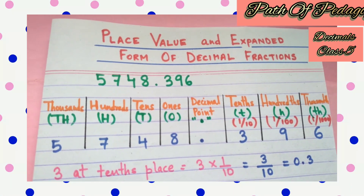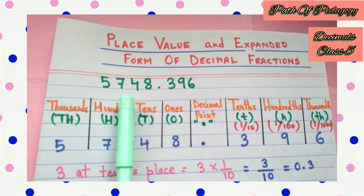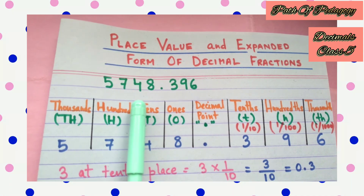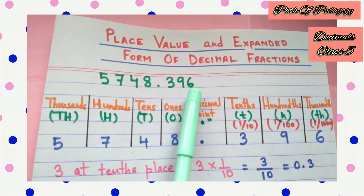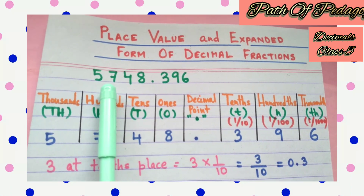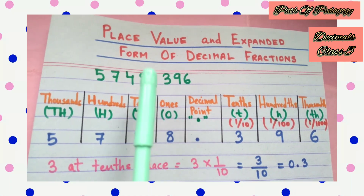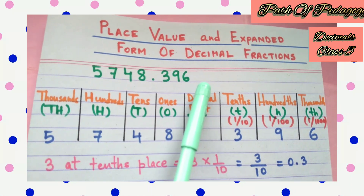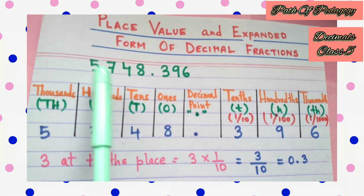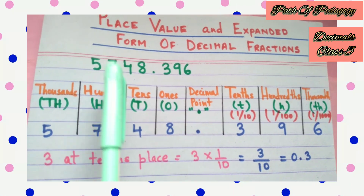Now today we will learn the place value system of a decimal number. Let's take the example 5748.396. Here is the decimal point, which is present between the whole number and the fractional part. On the left hand side of the decimal point there is the whole number, and on the right hand side of the decimal point is the fractional part. Now we need to understand the place value of each digit in this decimal number.